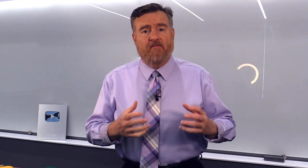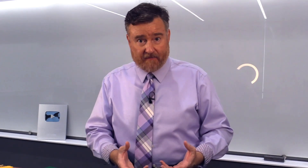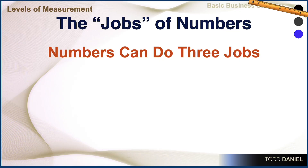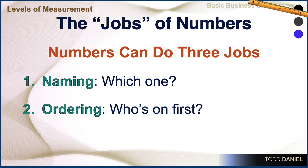The levels of measurement indicate the job that the number is doing. Numbers can do three jobs. A number can stand in for a name — if I want to know which player was downfield on the pass, it was number 23, that number is standing in for the name of the player. Numbers can also indicate an order: who is first, second, or third place?